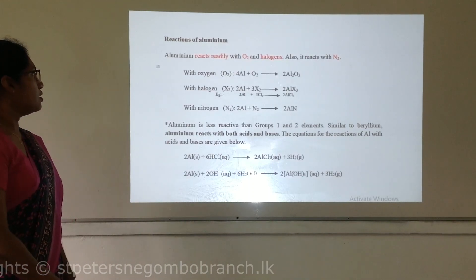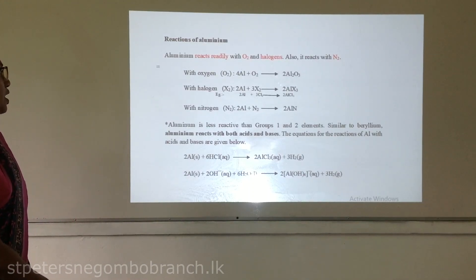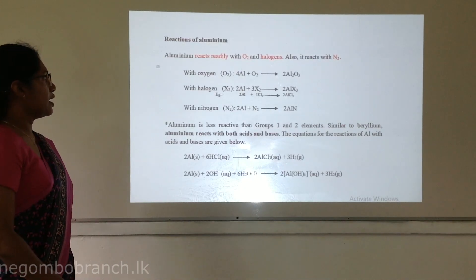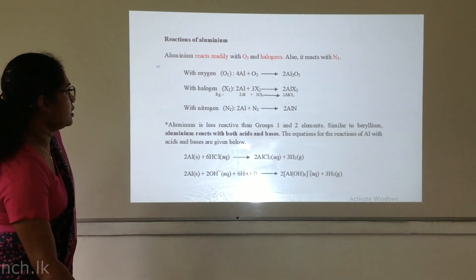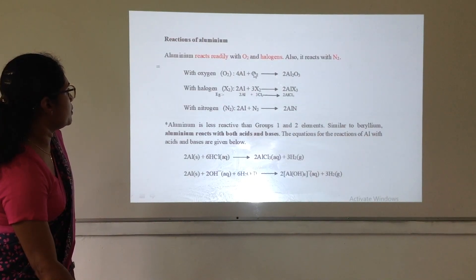Then, we have to consider about the reactions of aluminium. Aluminium readily reacts with oxygen, halogens, and nitrogen. Aluminium is less reactive than group 1 and 2. Here, I am showing you the reactions of aluminium.